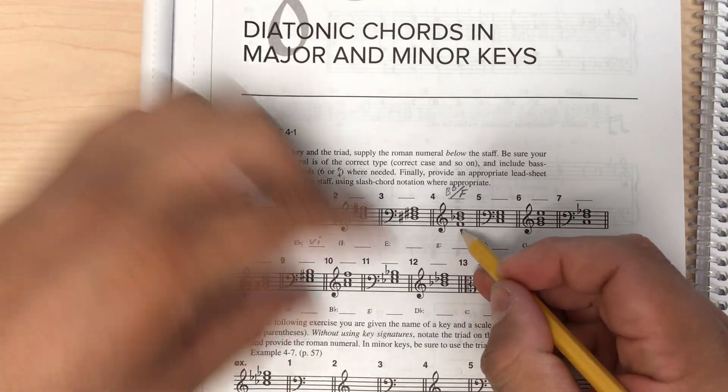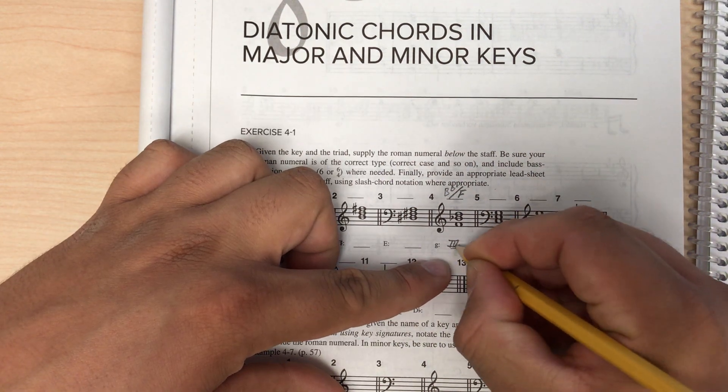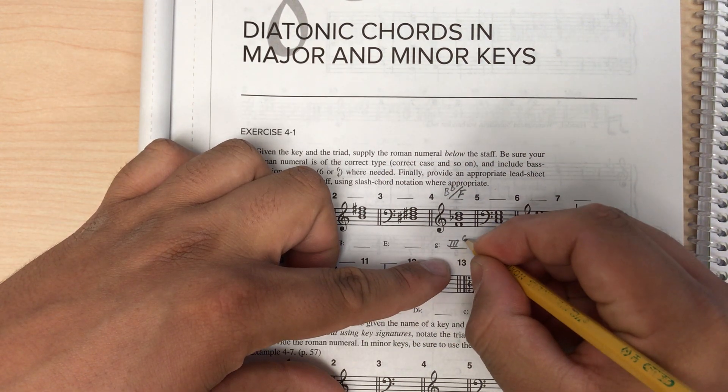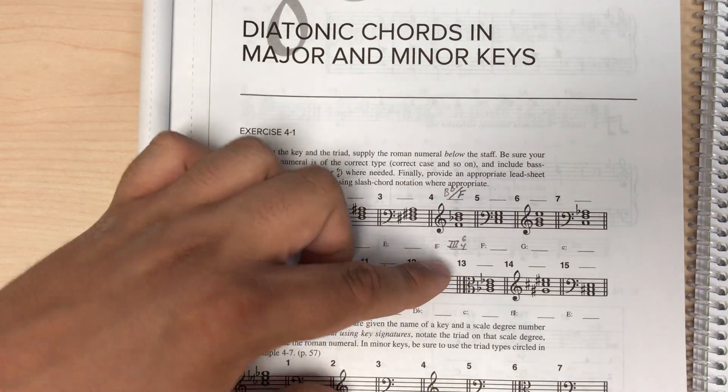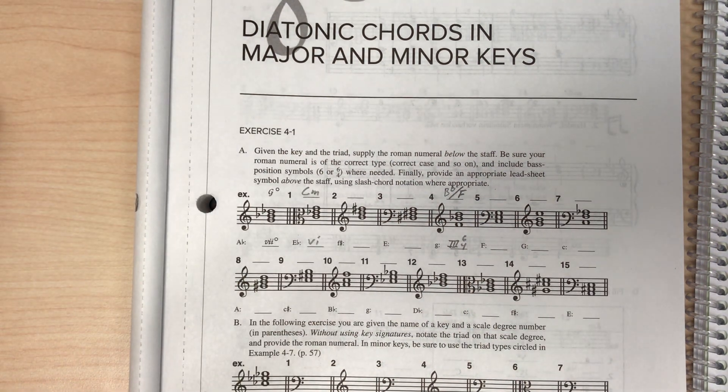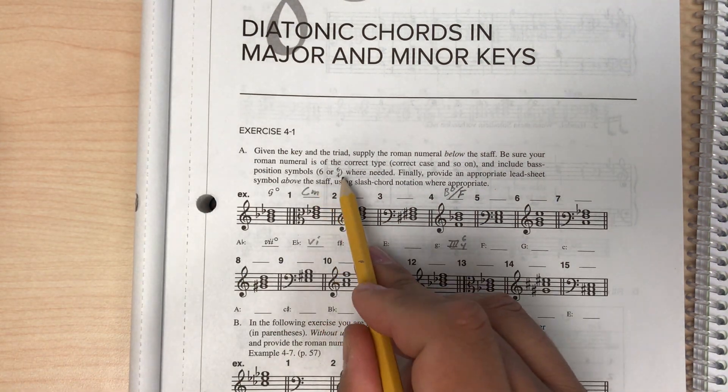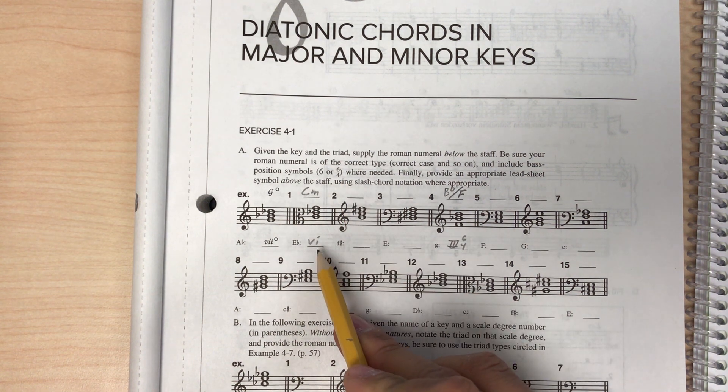So as spelled here, this is a three, major three, six, four. And those base position symbols, you just have to memorize, right? Either six, six, four, or nothing, if it's root position.